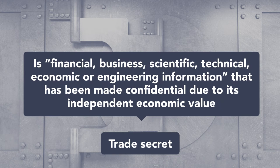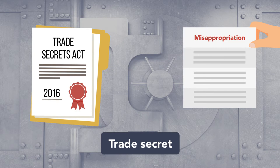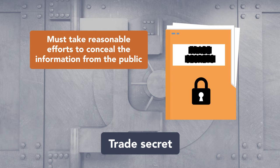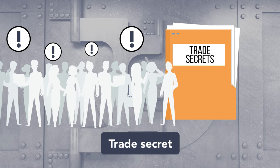A trade secret is financial, business, scientific, technical, economic, or engineering information that has been made confidential due to its independent economic value. Since the Defend Trade Secrets Act came into effect in 2016, trade secret owners can sue for misappropriation in federal court. Famous trade secrets include the formula for WD-40 and the Google search engine algorithm. To own a protectable trade secret, the company must take reasonable efforts to conceal the information from the public. In addition, the trade secret must have economic value and it must contain information. Trade secret protection ends when and if the information becomes public knowledge.